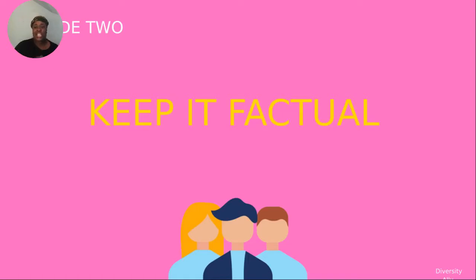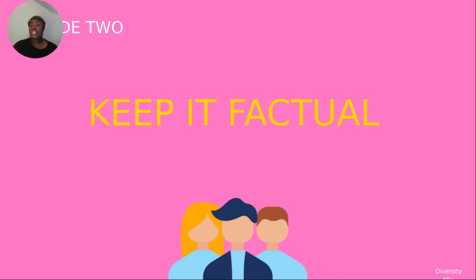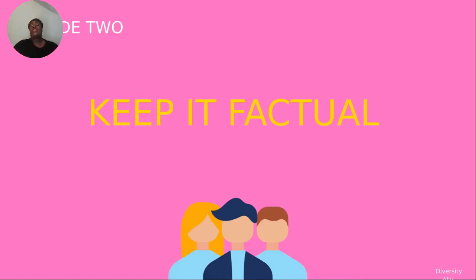Part of supporting other people — allyship — is listening and understanding what they're going through, listening to what they have experienced even if we don't always understand or relate to it. Code two is keep it factual: keep it factual if you're the one addressing the conversation, and try to lean into the facts if you're the one being approached.